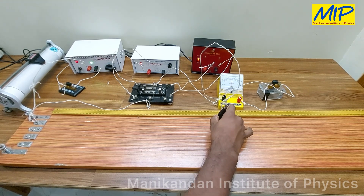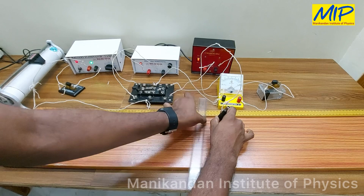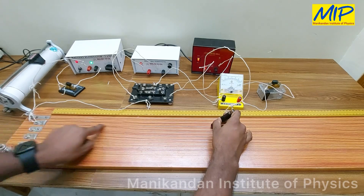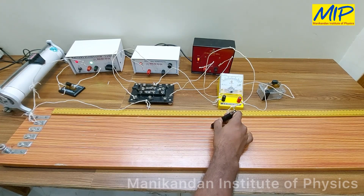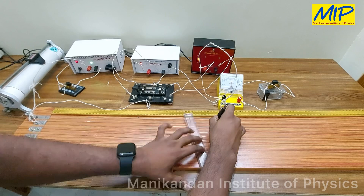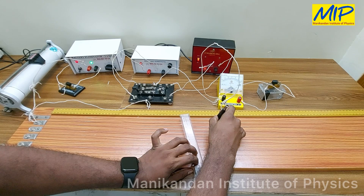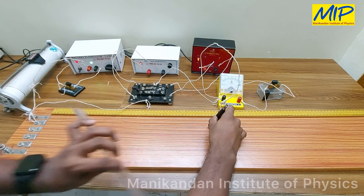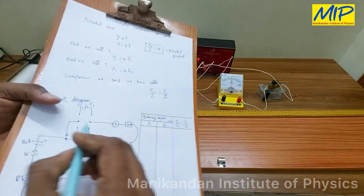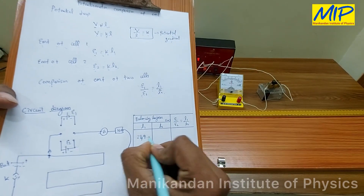If I measure this length using a scale, we are in the third line, which means: from start to first mark is 100, to second is 200, and then 49.5. So approximately 249.5 cm. This is the balancing length of E1, so the first L1 value is 249.5 cm.